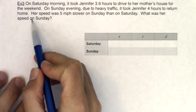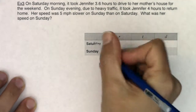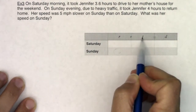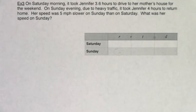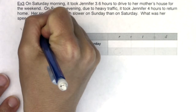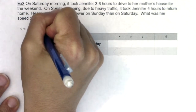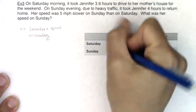I want her rate on Sunday. I've organized a table with Saturday and Sunday rows, where rate times time equals distance. The question asks for her speed on Sunday, so I'm going to declare that my variable: x equals Jennifer's speed on Sunday. I'll put x in the Sunday rate cell — that's ultimately what I'm trying to solve for.